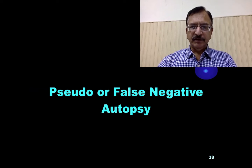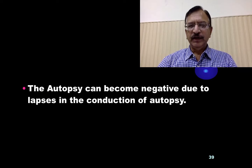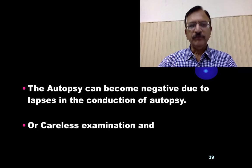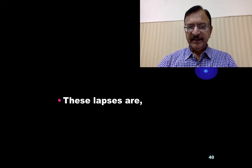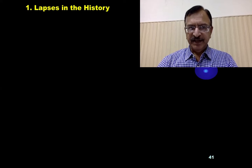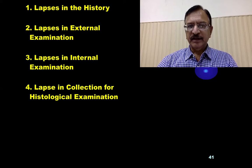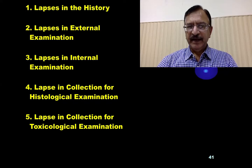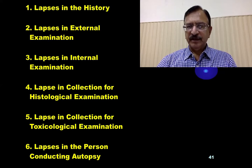Starting with pseudo or false negative autopsy: the autopsy can become negative due to lapses in the conduction of autopsy, careless examination, or conduction by an untrained person. These lapses are either lapses in the history, in external examination, in internal examination, in collection of material for histopathological examination, in collection for toxicological examination, or lapses in the person conducting the autopsy.